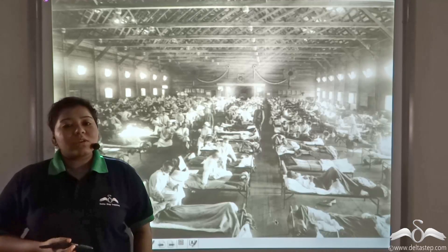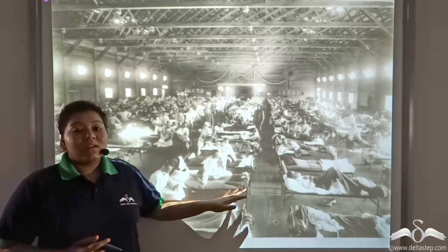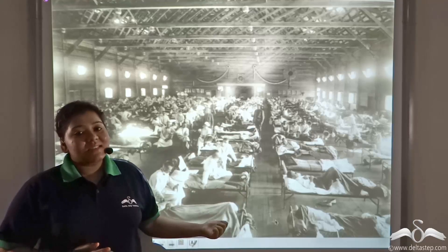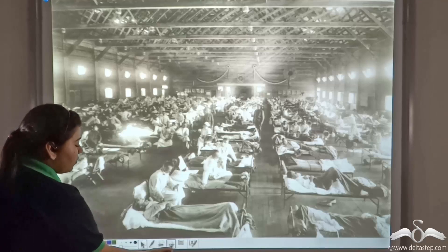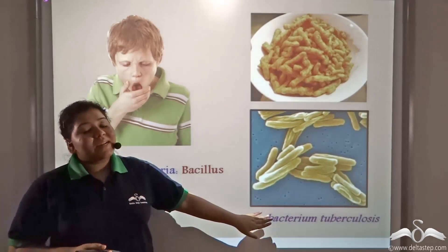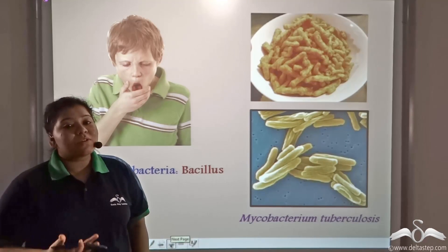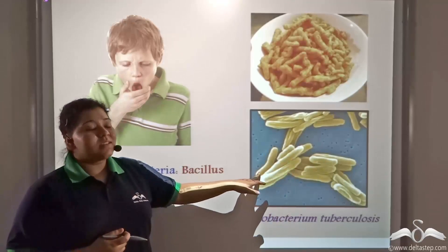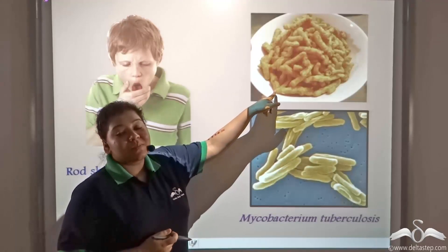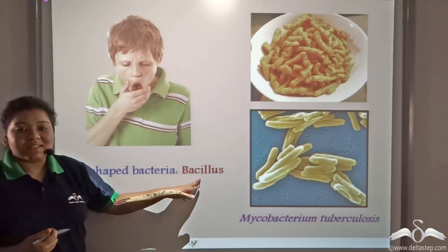In olden days, when there were no cure for bacterial diseases, there was widespread death among people. One of the various bacterial diseases that affected men was Mycobacterium tuberculosis, which caused a respiratory disease known as tuberculosis. This bacteria is rod-shaped, just like your favourite chips, and these rod-shaped bacteria are known as Bacillus.